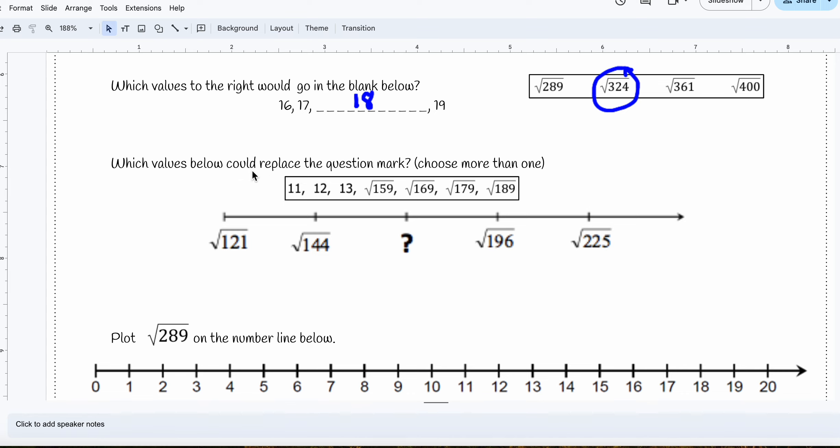Which values below could replace the question mark? So I know the square root of 121 is 11, square root of 144 is 12, and the square root of 196 is 14. So I know that I'm missing 13. I can circle 13, but I also know the square root of 169 is 13.